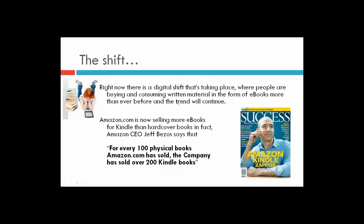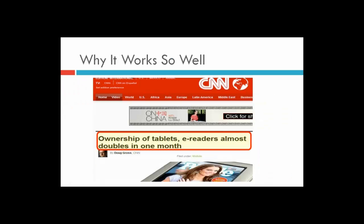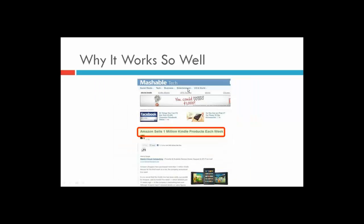This has opened up a huge opportunity for us, and it isn't just something that's slipped under the radar. There are people with incredible success with this. It's been published across the web by all the major news outlets. CNN talked about how fast tablet e-reader ownership almost doubled in one month. Mashable Tech covered it saying Amazon sells one million Kindle products each week — that is just insane.